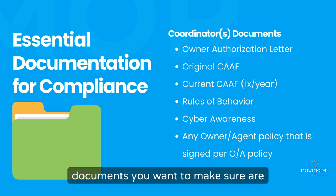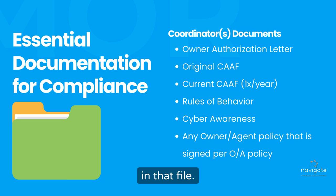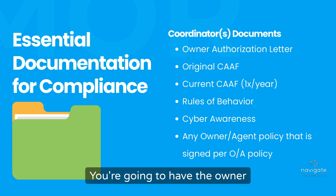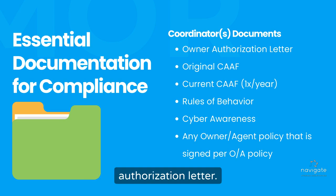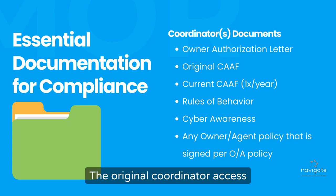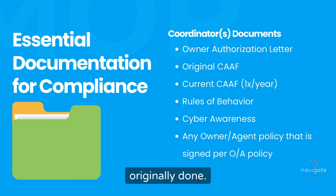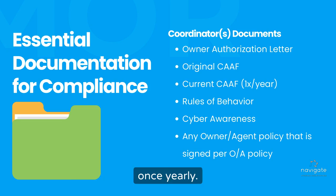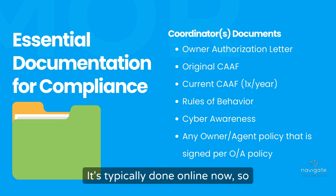There are some essential documents you want to make sure are in that file. For your coordinators to start with, you're going to have the owner authorization letter — that's the letter from the owner of the property that says that individual can act as coordinator. The original coordinator access forms, the handwritten one that was originally done. The current coordinator access form — coordinators should be doing that once yearly, and it's typically done online now, so you would just print out the page.